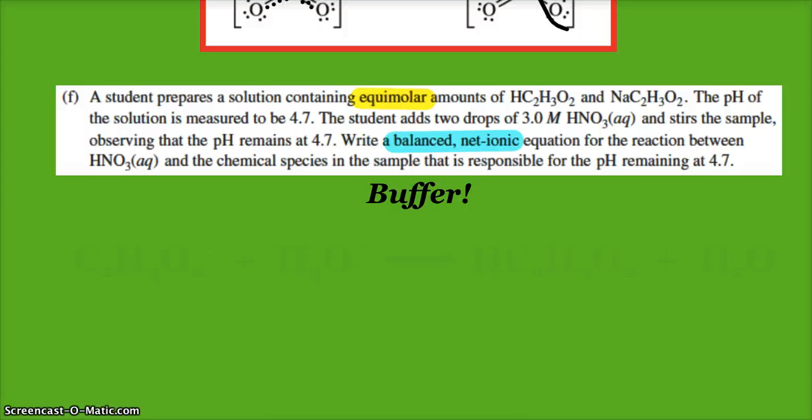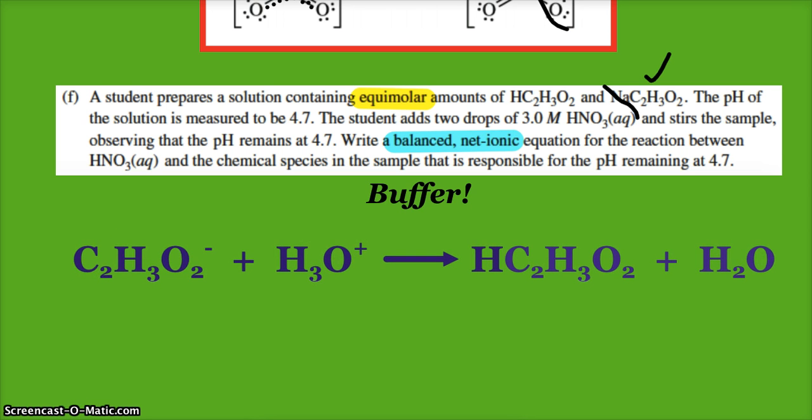So write the balanced net ionic equation for the reaction between my nitric acid and the chemical species that keeps the pH. Of course, nitric acid—we represent the strong acid with a hydronium ion. And what's going to react with it? Is the hydronium ion going to react with acetic acid? No. Is it going to react with the salt? Yes. Is it going to react with the sodium? No. Is it going to react with the acetate ion? Yes. So that's what the buffer does: the acid reacts with the negative ion, we make water, and we make the acetic acid, which keeps the pH in check.